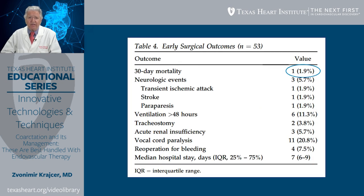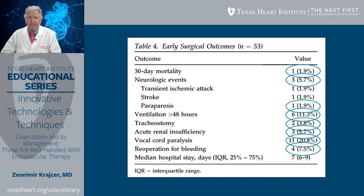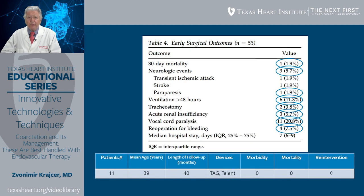As far as results are concerned, 30-day mortality was close to 2% with surgical repair. Neurological deficit occurred in 5.7% of patients, and paraparesis in 1.9%. A significant number of patients had respiratory complications: 11.3% required prolonged ventilation and 3.8% required tracheostomy. Acute renal insufficiency was present in 5.7% of patients, vocal cord paralysis occurred in almost 21%, 7.5% required re-operation for bleeding, and the median hospital stay was 7 days with a range of 6 to 9 days.